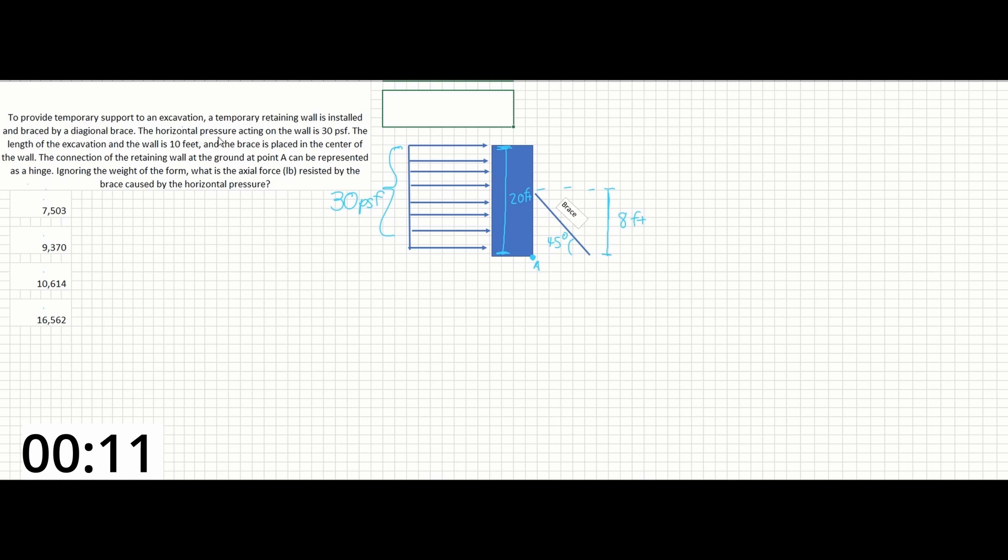The horizontal pressure acting on the wall is 30 pounds per square foot. The length of the excavation and the wall is 10 feet, and the brace is placed in the center of the wall.